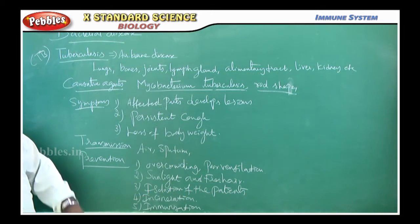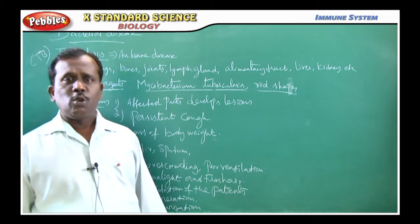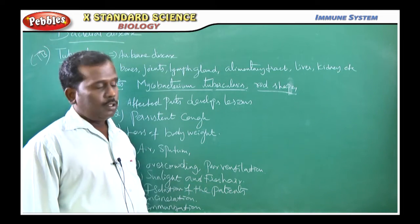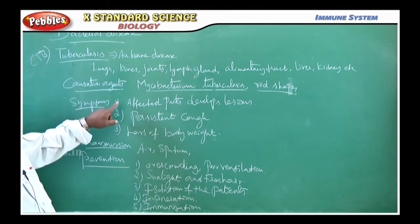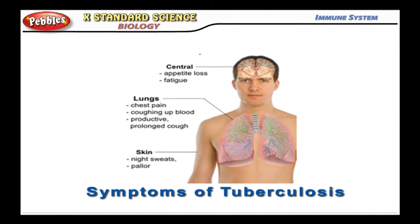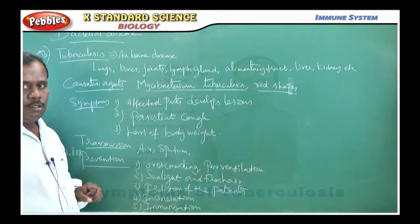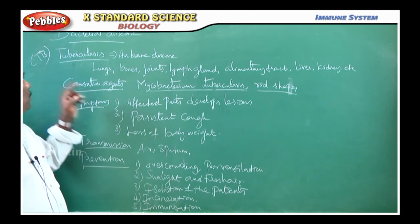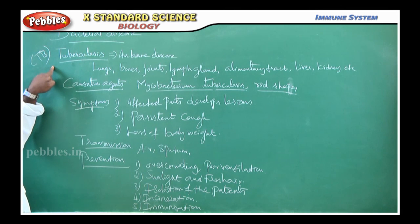Next, the symptoms. The first symptom is that persons affected with tuberculosis — the affected parts develop lesions. Another symptom is they get a persistent cough. And the third symptom is loss of body weight. These are the symptoms of tuberculosis, TB.